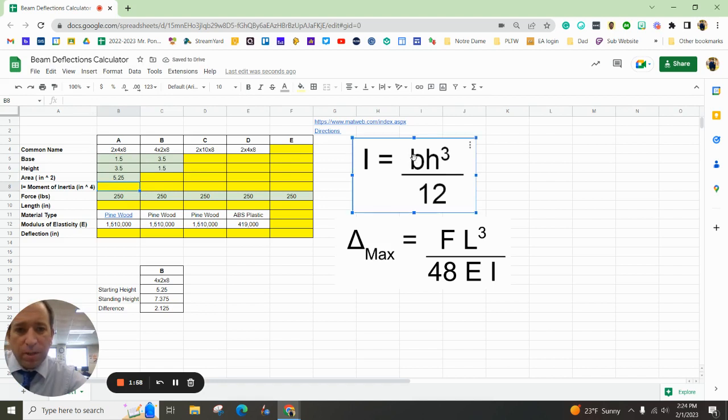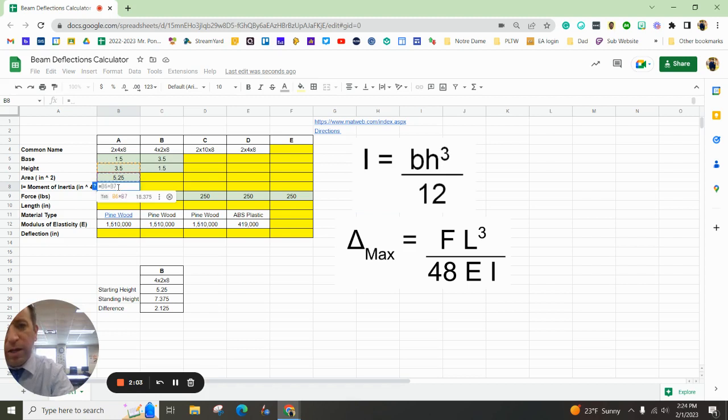The inertia formula is right here. So you can go equals and do the open parentheses base times height with a caret, which is shift 6 cubed or to the third power divided by 12. And go ahead and hit enter on that.